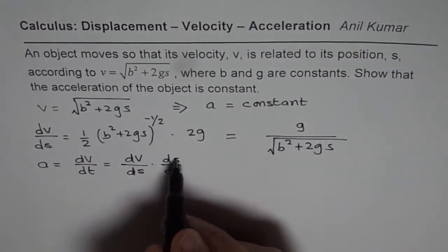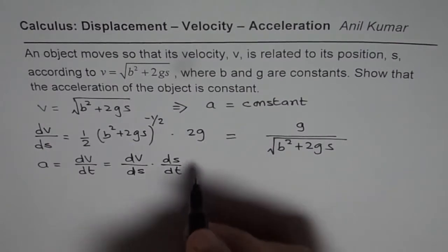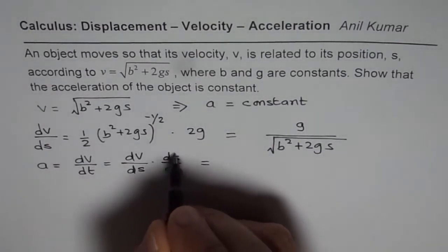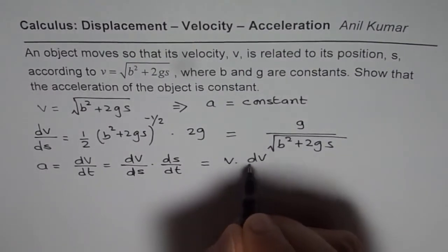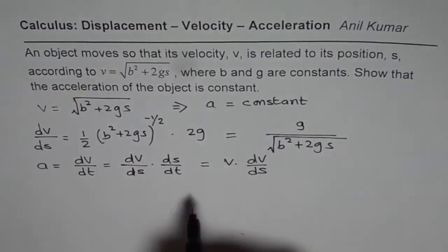Now rate of change of displacement with time is indeed velocity, so I could write this part as v, and this is dv/ds, so we get v times dv/ds.